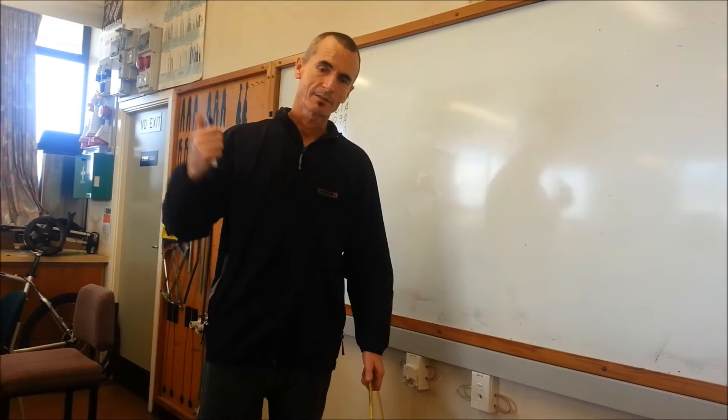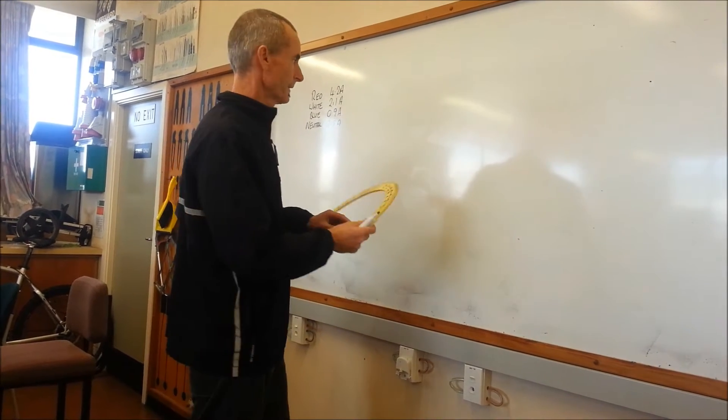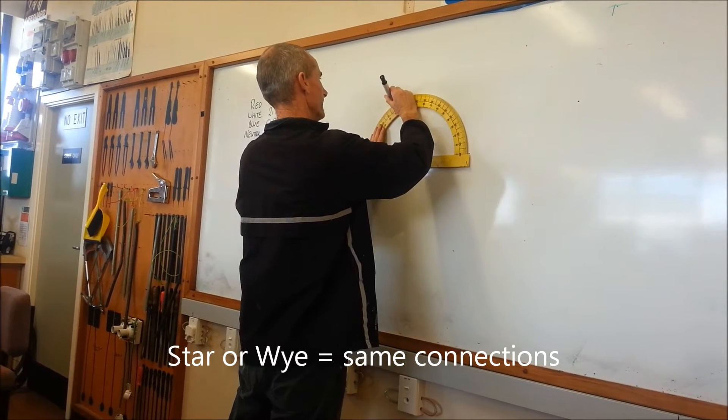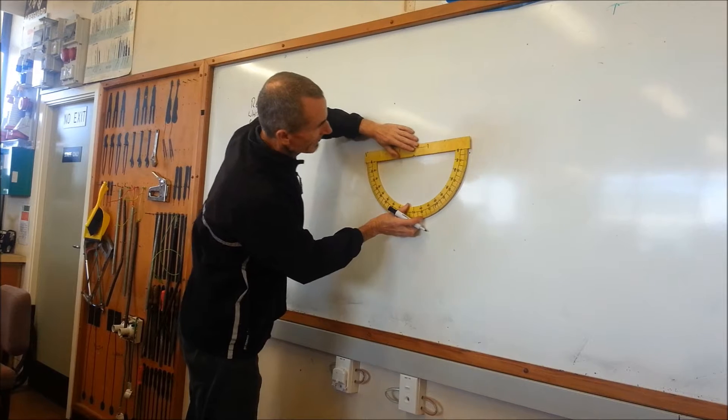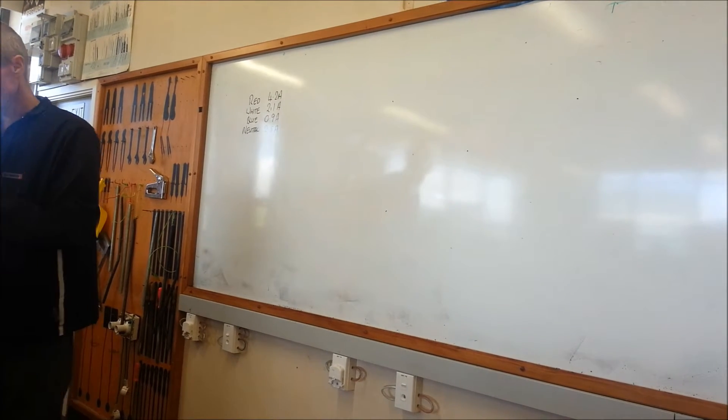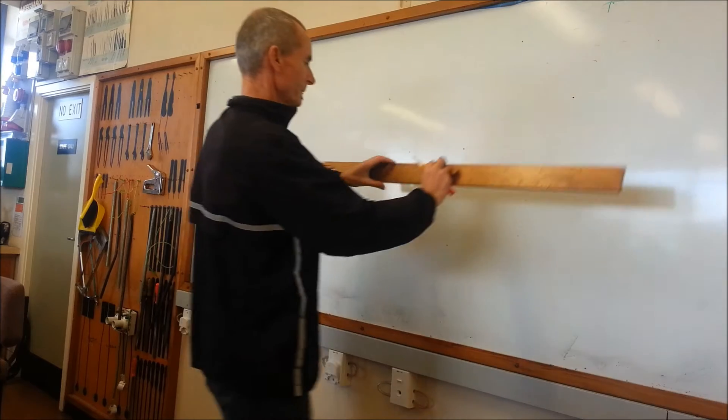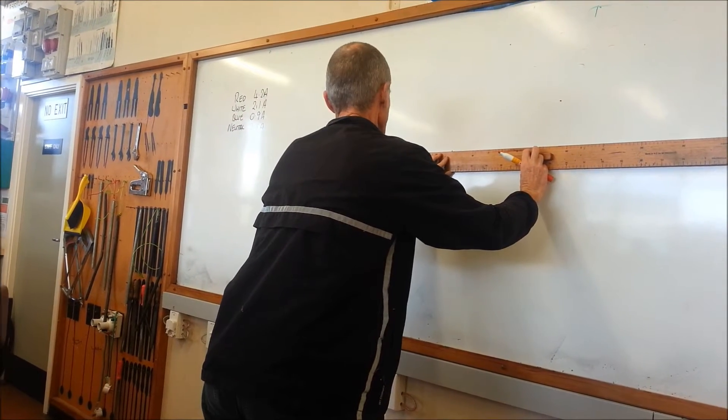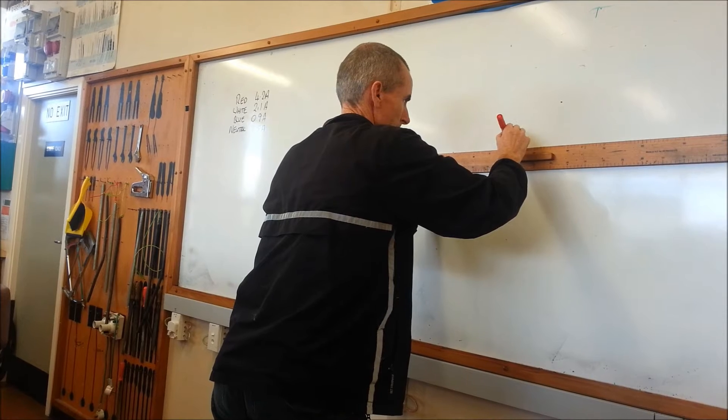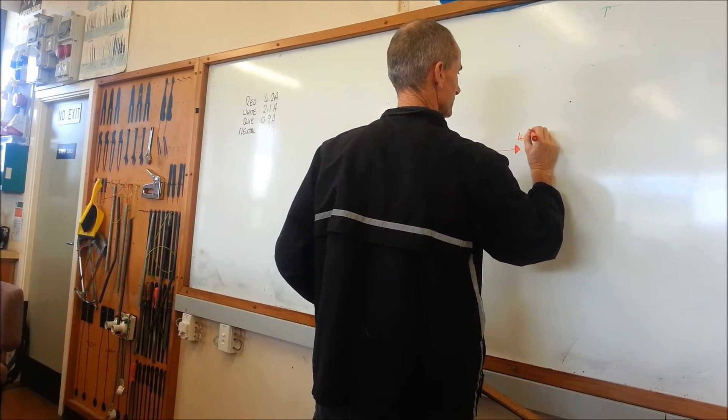Using the information we gained from the experiment, we'll now draw a result from the info we recorded. So we need to make a star drawing and mark it out the phases 120 degrees apart. So our red current was 4.2 amps.